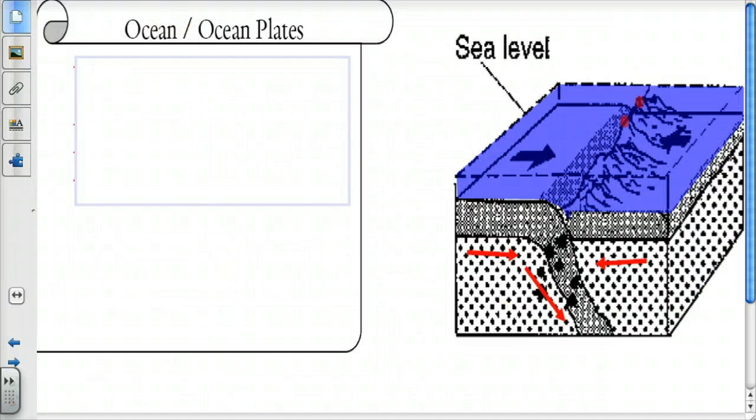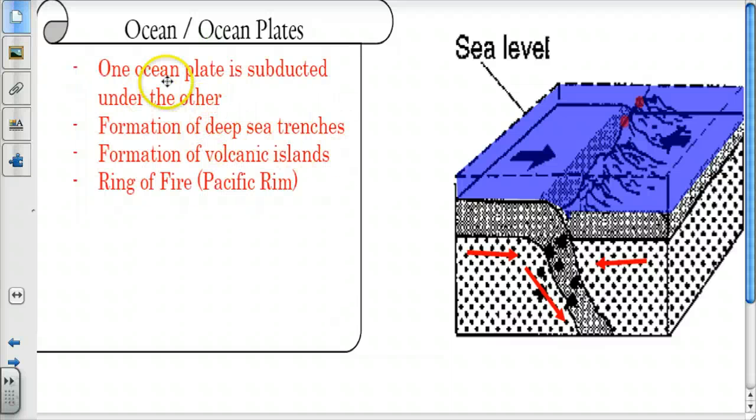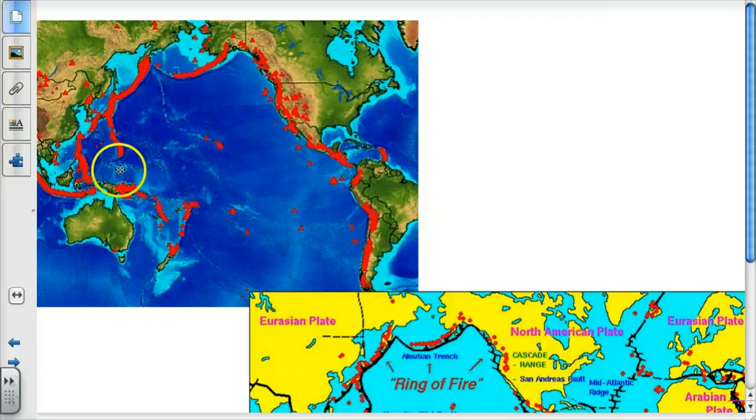The last type of convergent boundary is called an ocean-ocean boundary. We have two ocean plates, and one is being subducted under the other. This actually forms the deepest sea trenches, the deepest parts of the ocean, and it forms volcanic islands. Part of the Ring of Fire in this Pacific Rim is caused by this subduction of ocean crust and ocean crust. What ends up happening is one of these is going to be older, and the older the rock is, the cooler it's going to be. So this older, cooler rock is a little bit more dense than this rock here. So this subducts underneath, and then you get that volcanic activity, and it rises up. You'll get these islands out here forming, the islands in Indonesia forming.